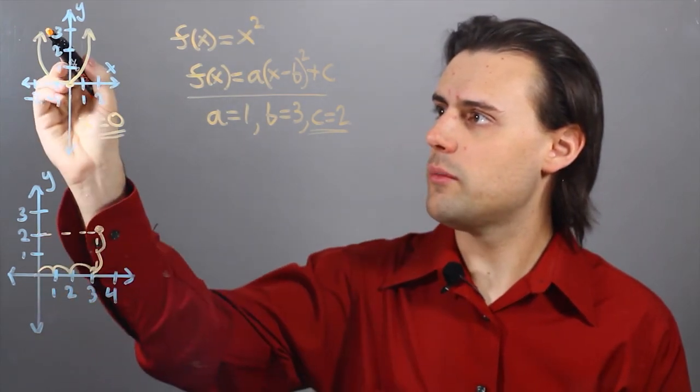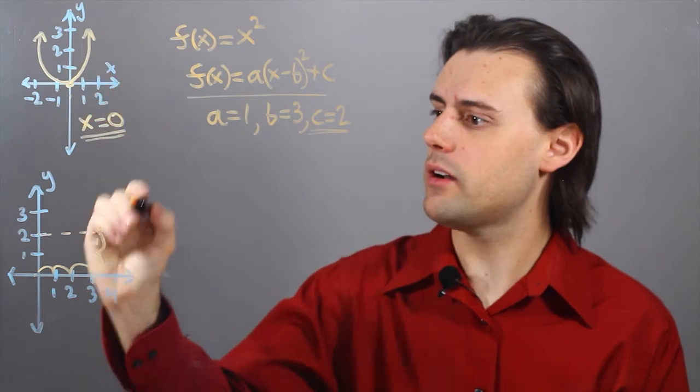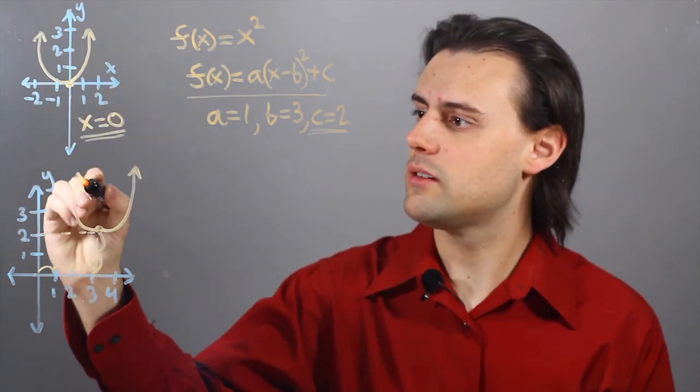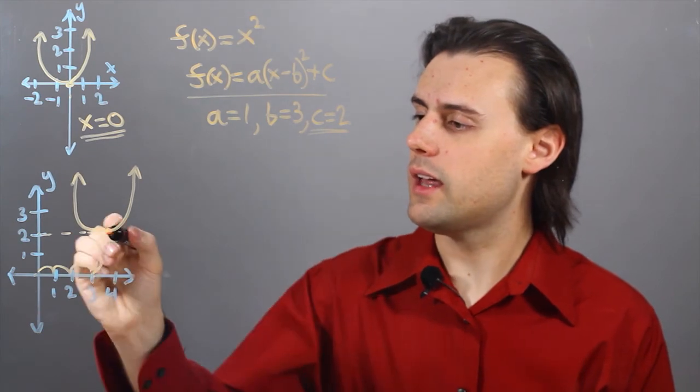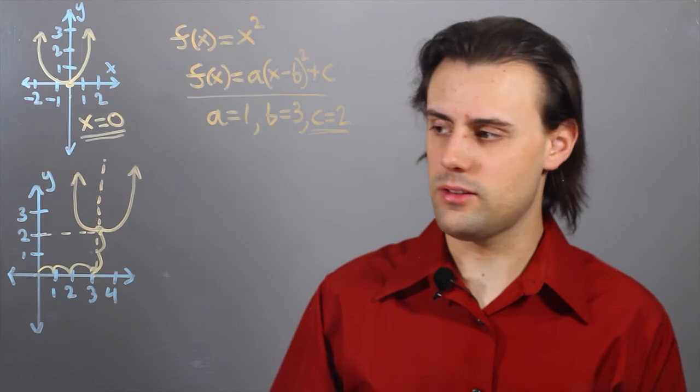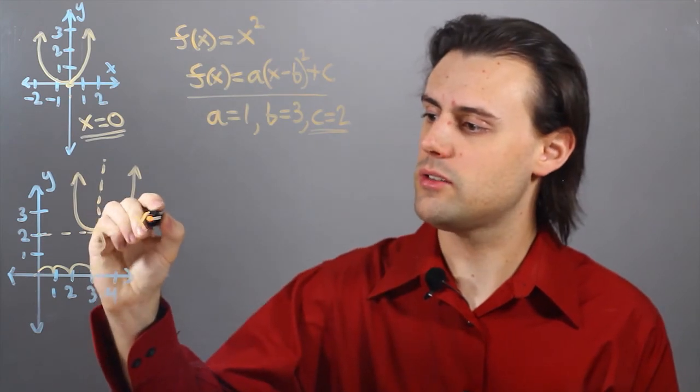So I'm essentially going to have x squared just in this location. And again, I'm going to have an axis of symmetry, where in this case, the axis of symmetry is x is equal to 3.